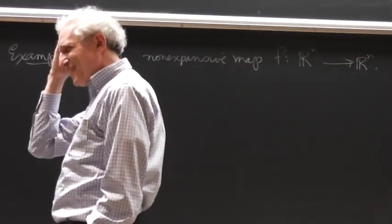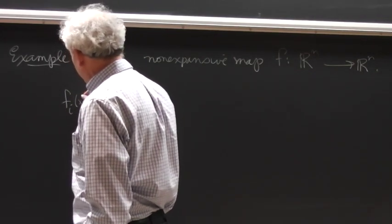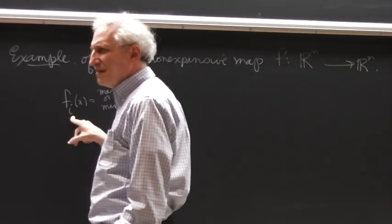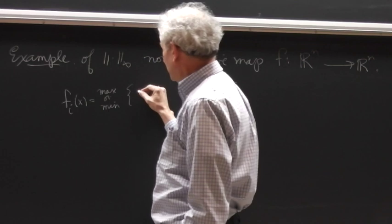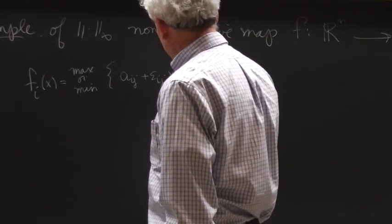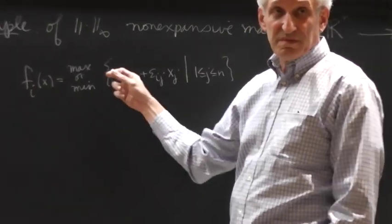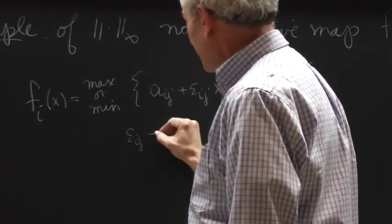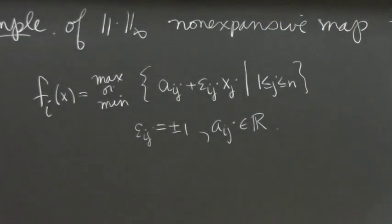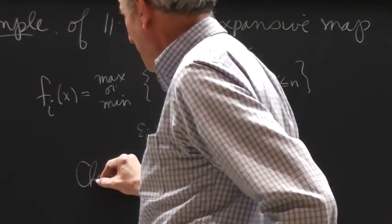So I'm going to write down the i-th coordinate. So f, the i-th coordinate of f acting on x is what? You either take the max or the min depending on i of the following collection of real numbers: a_{ij} plus epsilon_{ij} times x_j as j goes from 1 to n. Now what are these constants here? a_{ij} are any real numbers, and epsilon_{ij} is plus or minus 1. So for each i you make a choice, max or min. That's part of the definition. And then I'll leave it to you to check that it's non-expansive.